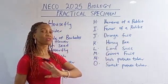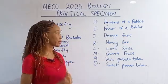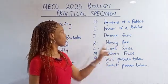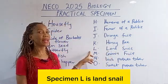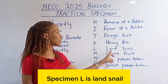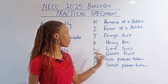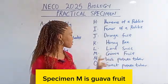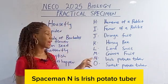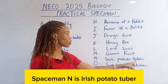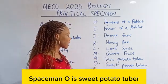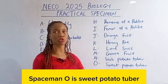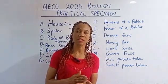Specimen K is honey bee, specimen L is land snail, specimen M is guava fruit, specimen N is Irish potato tuber, specimen O is sweet potato tuber.